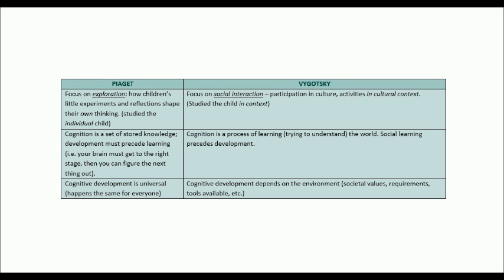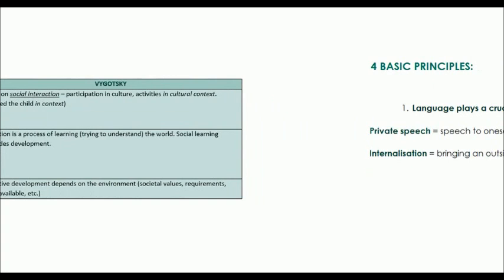For Piaget, development happens and then learning happens, so you have to get to the right stage before you can learn things at that particular level. To Vygotsky, cognition was a process of learning — you try to understand the world, and in understanding the world, you develop. Piaget believed cognitive development is universal and happens in the same order for everyone, whereas Vygotsky believed cognitive development depends on the environment: the society you're in, its values, and the tools available to you.